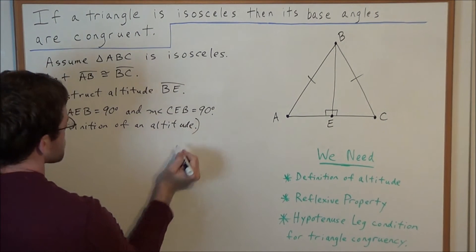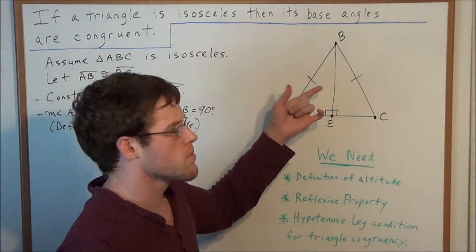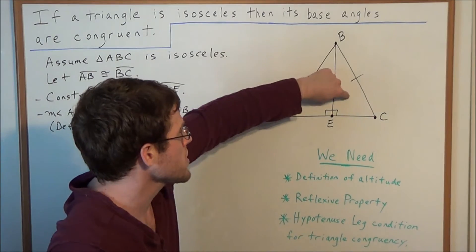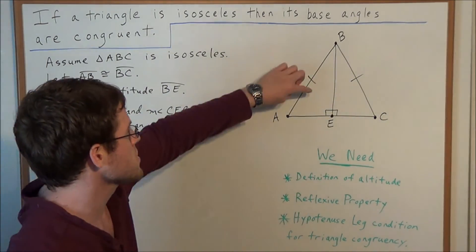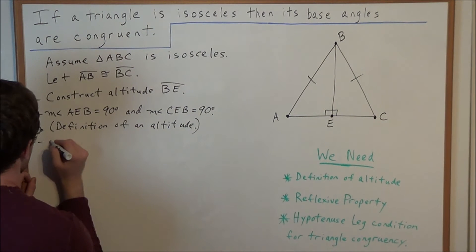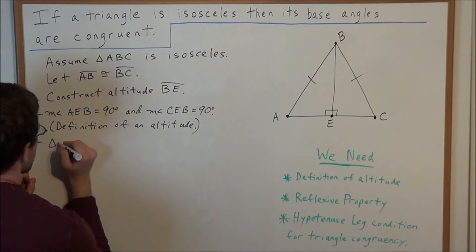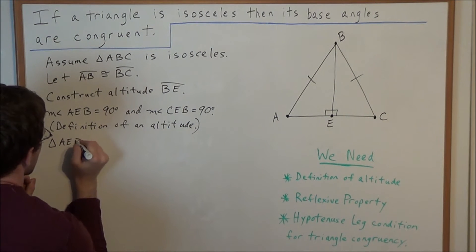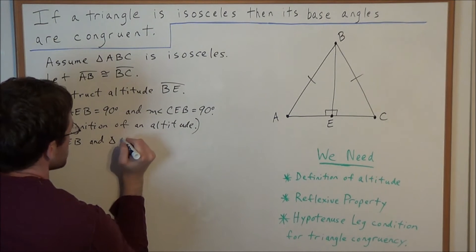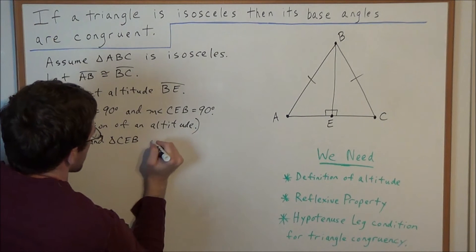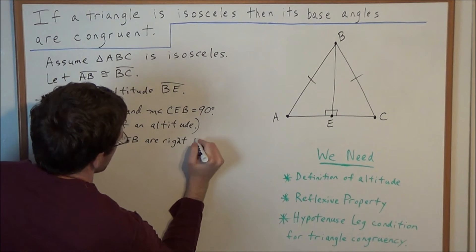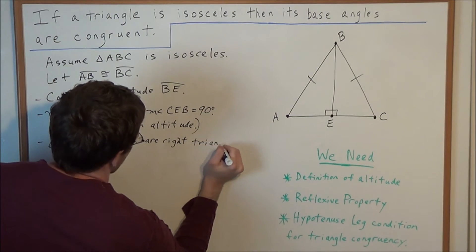So, now from here, we need to state, even though it may be obvious, when we construct this altitude, we create two right triangles, because these two triangles here both contain 90 degree angles. This allows us to say that triangle AEB and triangle CEB are right triangles. And why? They both contain right angles.